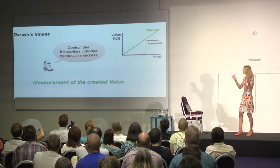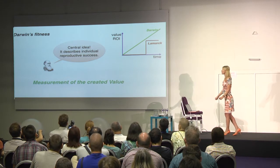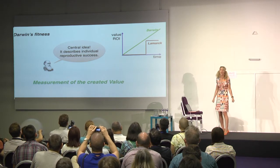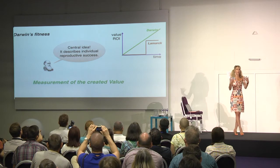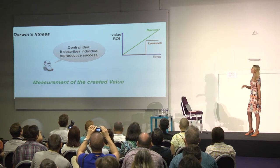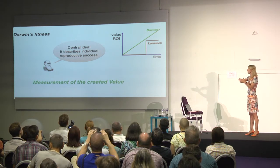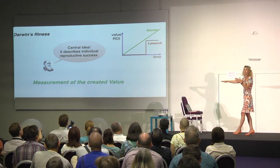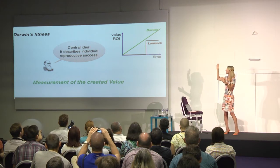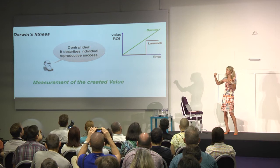Darwin's fitness is one of the central ideas in the whole theory. It describes individual reproductive success — it's in fact a measurement of created value. From the graph, we can see that Lamarck's giraffes didn't create any value — no return on investment for a long time — while Darwin's giraffes were creating value from the very beginning.